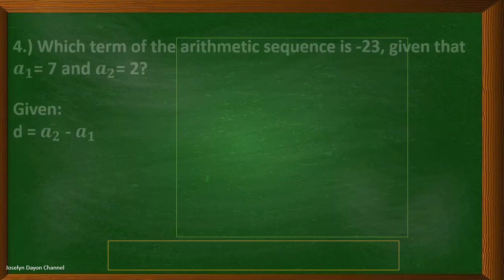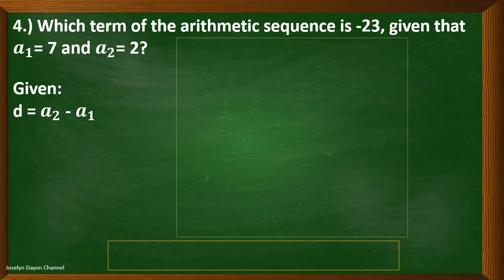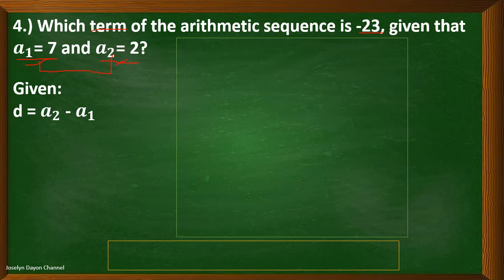Let's move on to problem number 4. Which term of the arithmetic sequence is negative 23, given that a sub 1 equals 7 and a sub 2 equals 2? With this problem, we are also asked to determine the value of n — which term it is. We can determine the common difference easily since we have consecutive terms: a sub 2 minus a sub 1 gives 2 minus 7, which is negative 5.